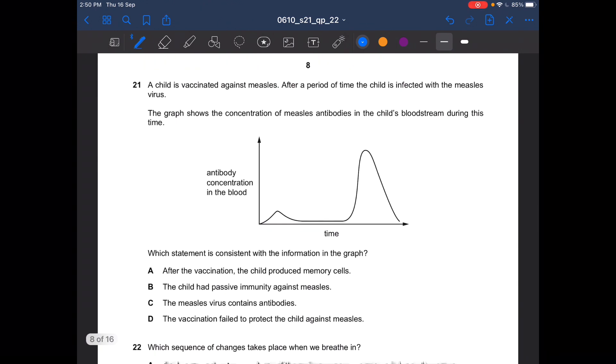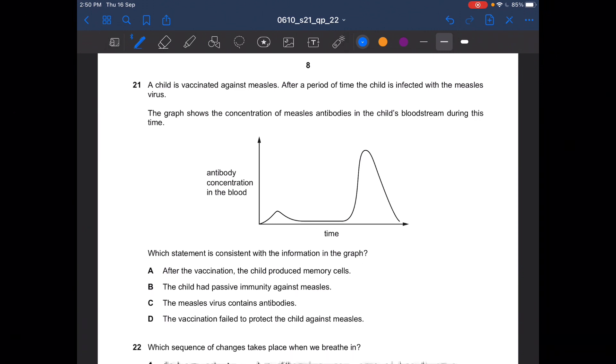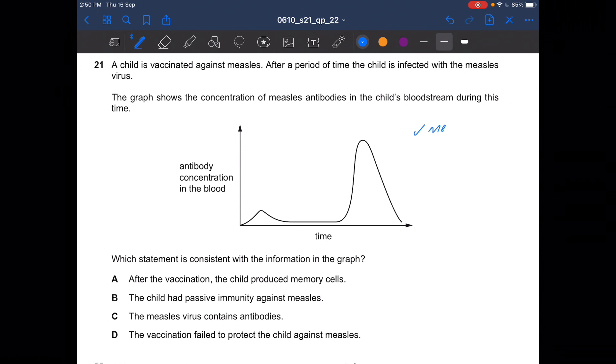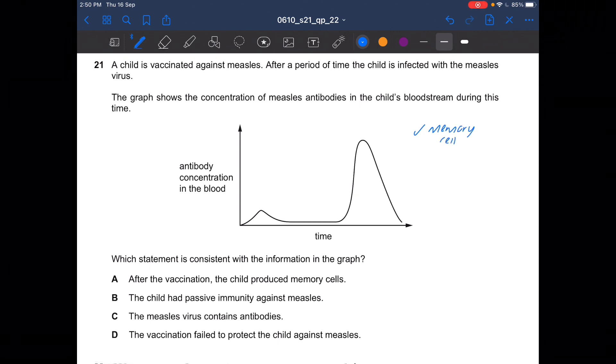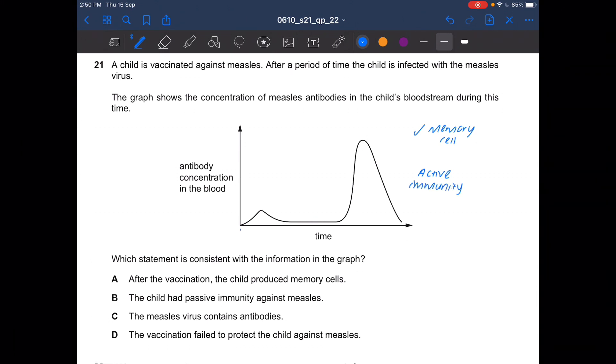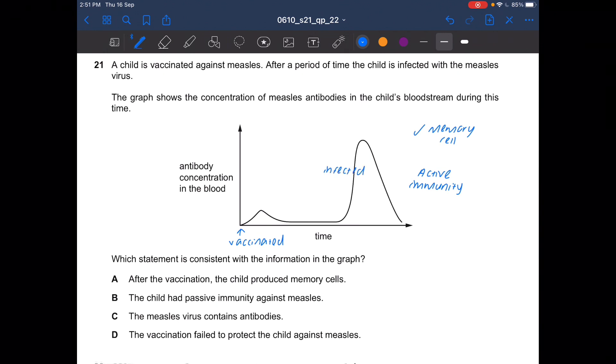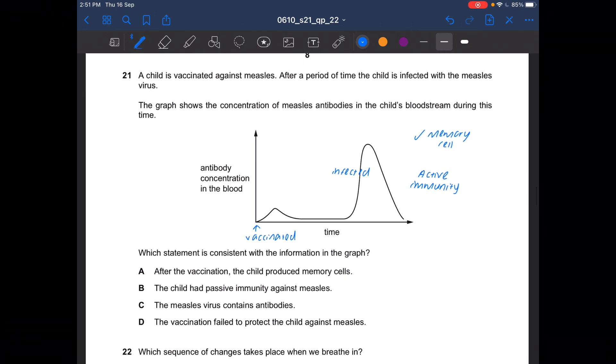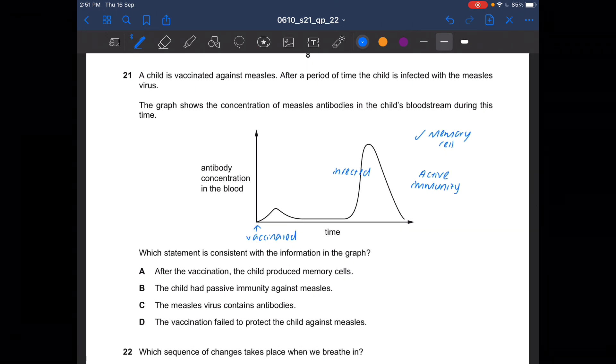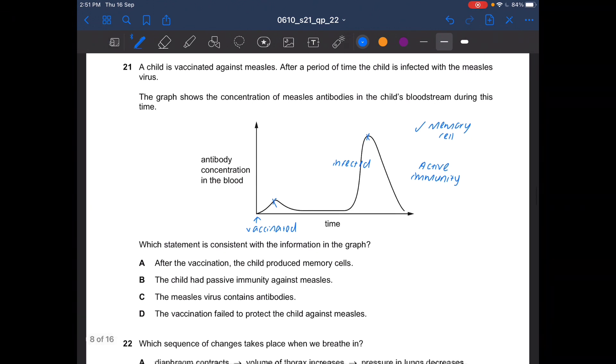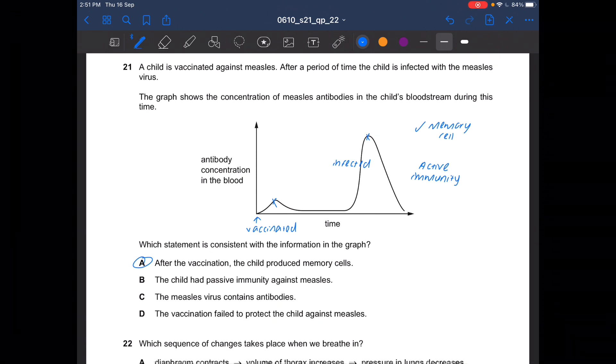Next question. A child is vaccinated against measles. After a period of time, the child is infected with the measles virus. The graph shows the concentration of measles antibodies in the child's bloodstream during this time. Which statement is consistent with the information in the graph? From the graph, we know that memory cells are produced and this is an active immunity. The first peak should be when a child is vaccinated against measles. The second peak is when a child is infected with the measles virus. We know that memory cells are produced as after infection the antibody concentration in the blood increased dramatically. So the answer should be A. After the vaccination, the child produces memory cells.